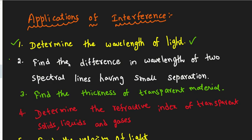The second application is to find the difference in the wavelength of two spectrum lines having small separations. For example, if you have a spectrum with closely spaced lines, you can use this interference concept to make the wavelength difference easy to measure.